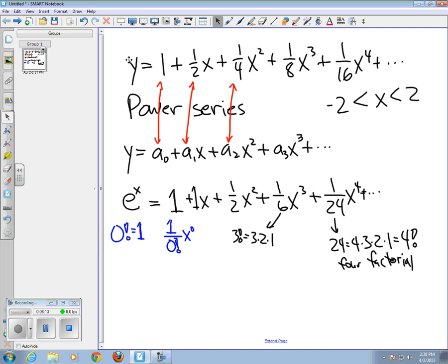So, factorials grow very rapidly in size, faster than powers of any number. So, that's why this guy converges for any value of x.